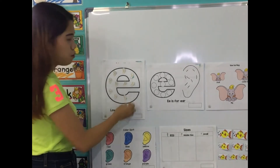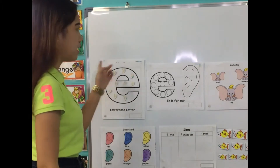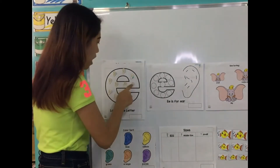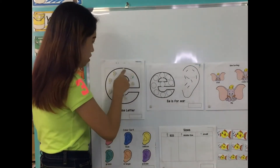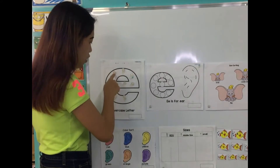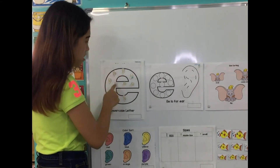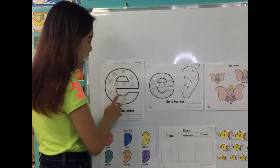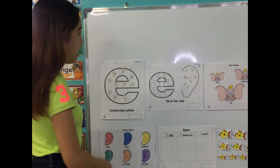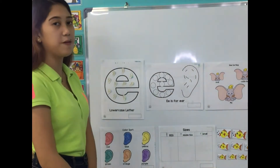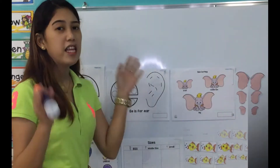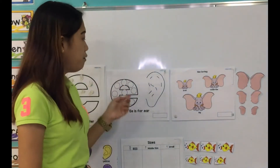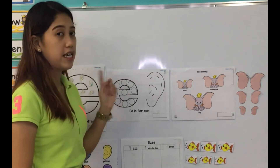How about we count all the ears inside the lowercase E? 1, 2, 3, 4, 5, 6, 7, 8, 9, 10. There are 10 ears. And how about we dub our letter E?